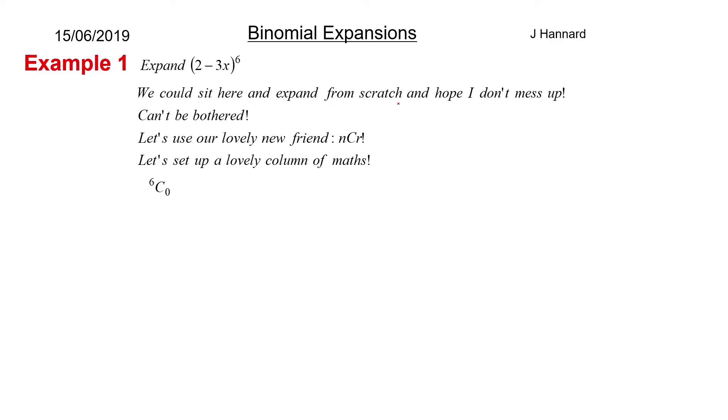So, expand 2 minus 3x all to the 6. Now it's starting to get a little bit serious. We could sit here and expand from scratch and hope that you don't mess up, but I can't be bothered. Let's use our lovely new friend, nCr. Let's set up a lovely column of maths. I type out all my Pascal triangle coefficients, just like that. So I've got 6C0, 6C1, 6C2, all the way up to 6C6. If it was 7, it would go up to 7. If it was 4, it would go up to 4.